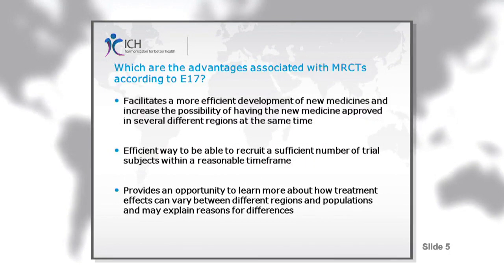So what are the advantages with multi-regional clinical trials compared to trials performed in a single region? Multi-regional clinical trials can facilitate more efficient development of new medicines and increase the possibility of having the new medicine approved in several different regions at the same time. Thereby, patients may have earlier access to new medicines worldwide. To perform a multi-regional clinical trial is also an efficient way to recruit a sufficient number of trial subjects within a reasonable timeframe. This may be particularly important when the disease being treated is rare or when large numbers of subjects are required.